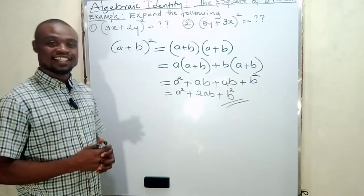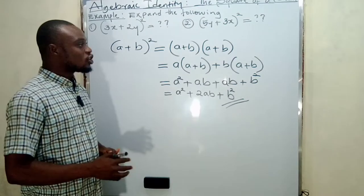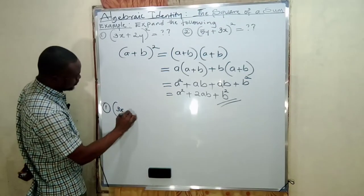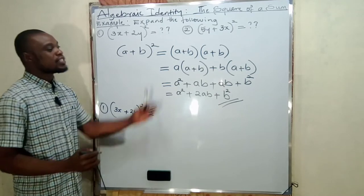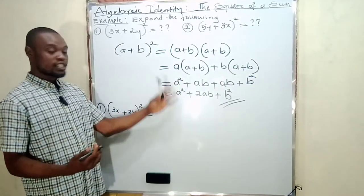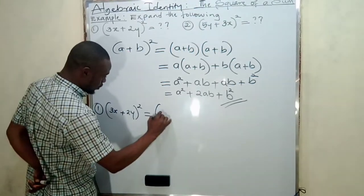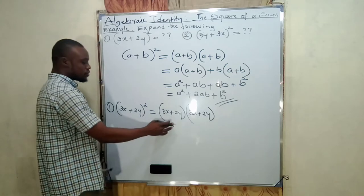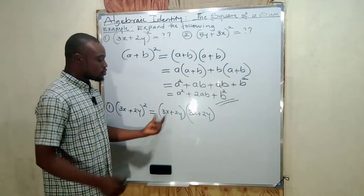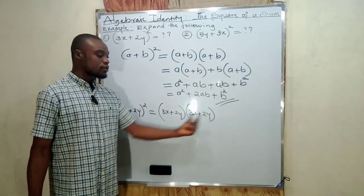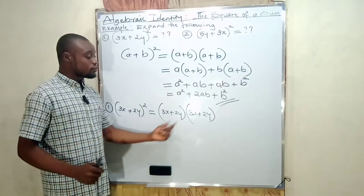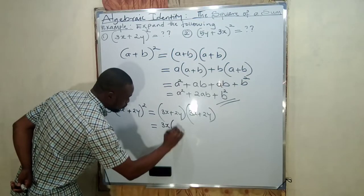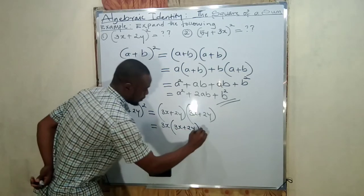This is also a quadratic expression. Now, example one: we have (3x + 2y)². We use the same method. So we write (3x + 2y) multiplied by (3x + 2y). Just like before, we identify the first term — 3x — and the second term — 2y — in the first bracket, and likewise in the second bracket. We use the first term to multiply the second bracket and the second term to multiply the bracket.